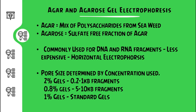In agar and agarose gel electrophoresis, the gel is prepared using agar, which is a mix of polysaccharides obtained from seaweed, or agarose, which is a sulfate-free derivative of agar. This type of gel is usually used for DNA or RNA fragments. The materials used are less expensive and horizontal electrophoresis is preferred. The pore size is determined by the concentration of the gel used — for example, a 2% gel is used for 0.2 to 1 kb fragments and 0.8% gel for 5 to 10 kb fragments.